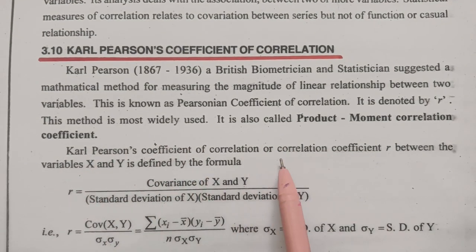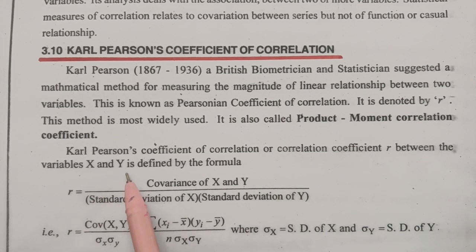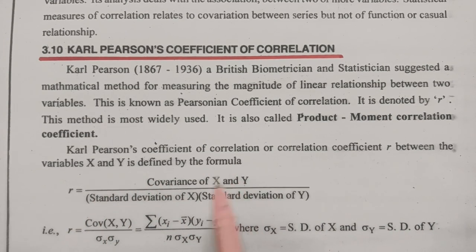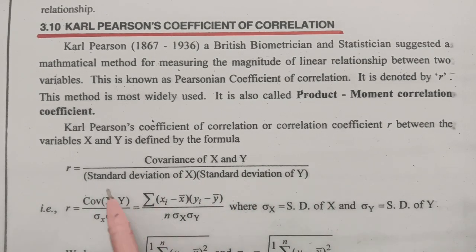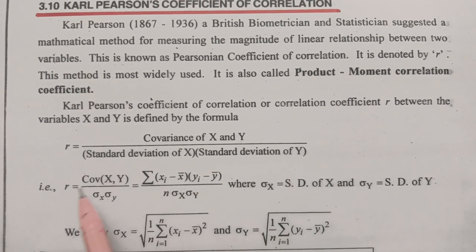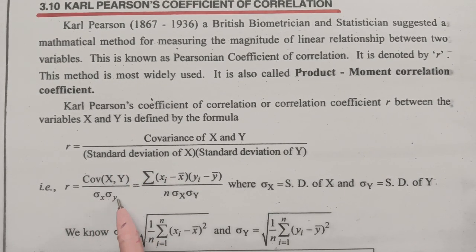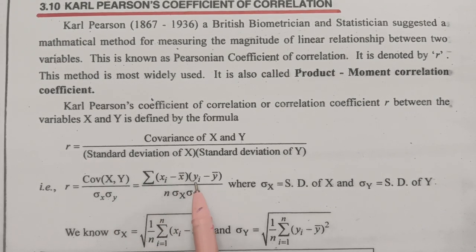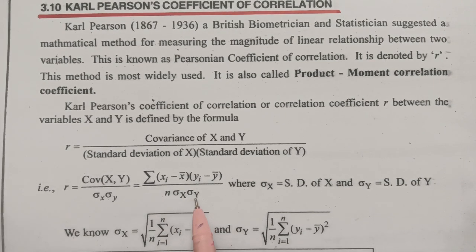Karl Pearson's coefficient of correlation between two variables X and Y is defined by the formula: gamma equals the covariance of X and Y divided by the standard deviation of X into the standard deviation of Y. The formula is: gamma = [Σ(x − x̄)(y − ȳ) / n] / (σx × σy), where σx and σy are the standard deviations of X and Y respectively.